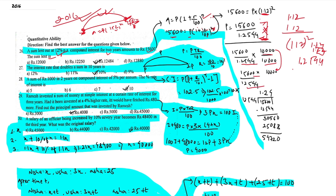15,600 divided by 12,544. I will do this manually without a calculator. The division gives approximately 1.2440... we confirm the result step by step through manual long division.